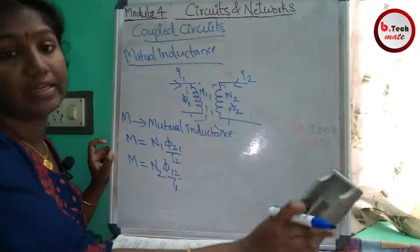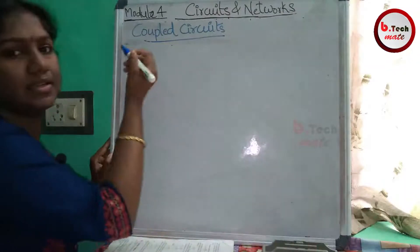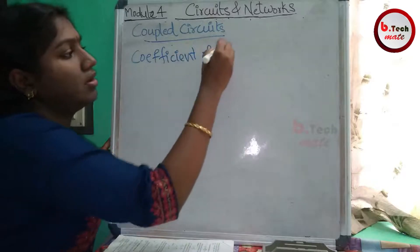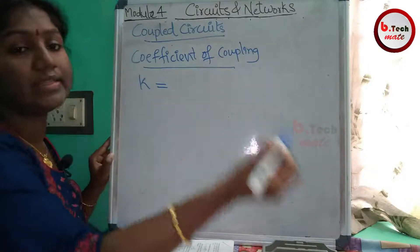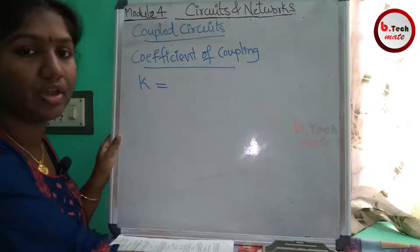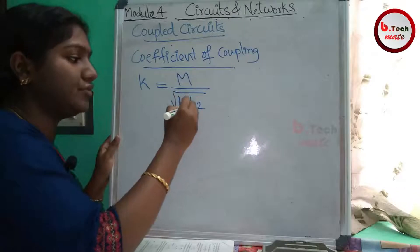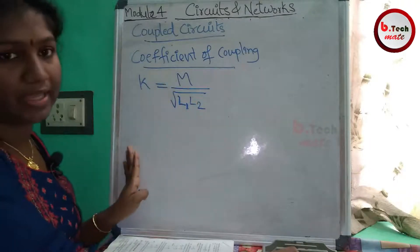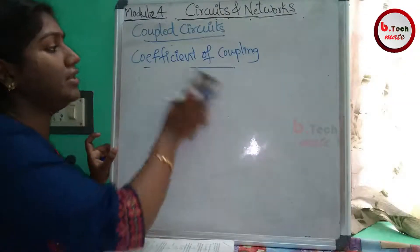Now we have a link between self inductance and mutual inductance — we have the coefficient of coupling, represented by K. The coefficient of coupling K is equal to M divided by the square root of L1 times L2.